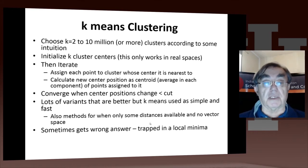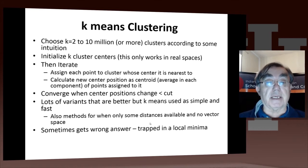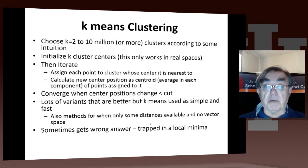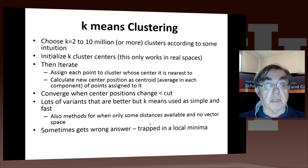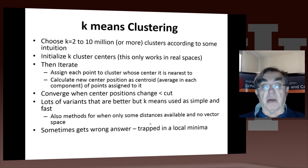Given cluster centers, we go through an iteration. We take all the points and all the centers, and assign each point to the cluster whose center is nearest. Then we calculate the center of each cluster as the centroid — namely the average in each component of the points assigned to it. Now we have a new set of centers, and we keep iterating this process of assigning points to centers and calculating new centers until some stopping criteria is met. You can look at whether the center positions change, whether the change is small, or look at changes in the distance between points and centers.